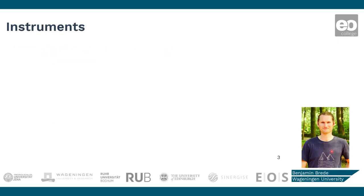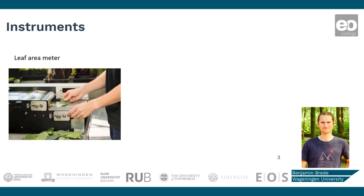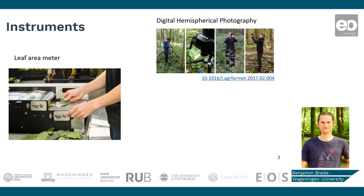Obviously the best way to measure the area of all the leaves of a patch of vegetation is to harvest them and directly measure the leaves. This can be done with a leaf area meter. This approach is in fact the gold standard for LAI. However, it becomes problematic when larger areas need to be scanned or when the vegetation cannot be harvested, as is the case in trees.